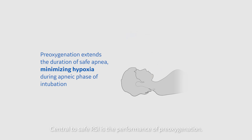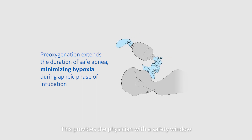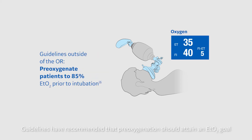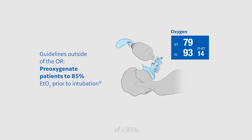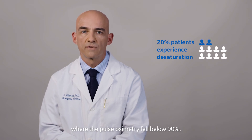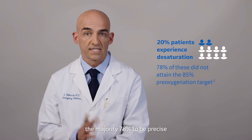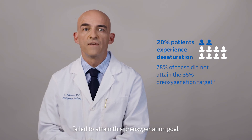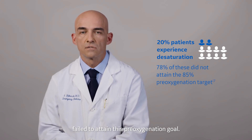Central to safe RSI is the performance of pre-oxygenation. This provides the physician with a safety window during the apneic period of intubation, where desaturation and hypoxia is of greatest risk. Guidelines have recommended that pre-oxygenation should attain an ETO2 goal of greater than or equal to 85%. One study showed patients that experienced desaturation, where the pulse oximetry fell below 90%, the majority — 78% to be precise — failed to attain this pre-oxygenation goal.